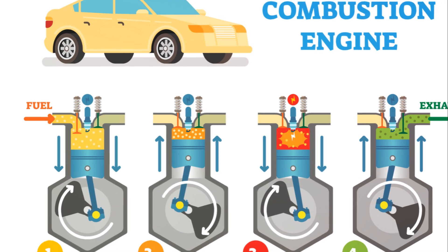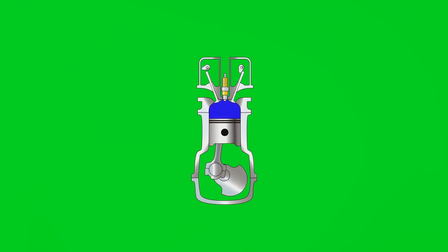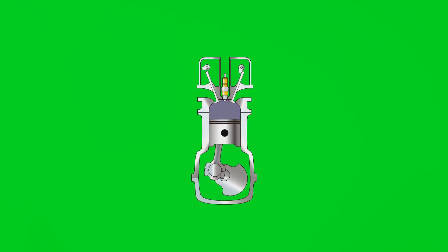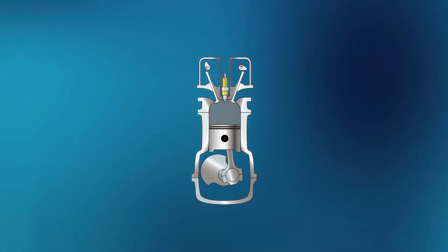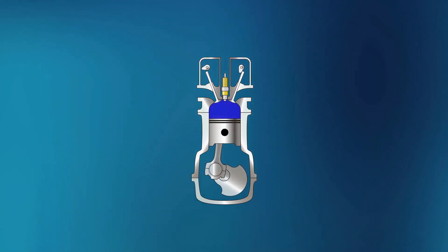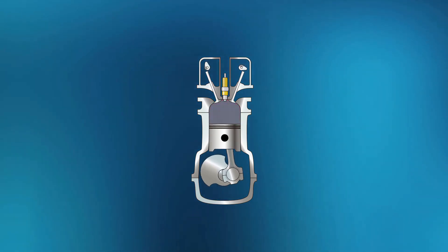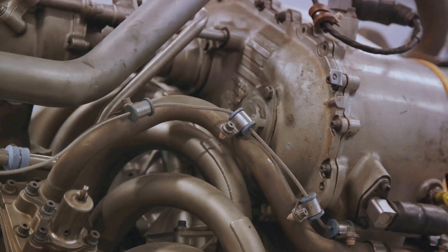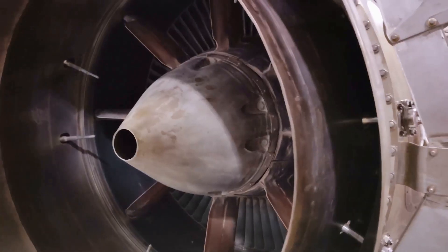The intake stroke is the first phase, where the piston moves down from the top of the cylinder, reducing the pressure inside the cylinder. During this phase, a mixture of fuel and air enters the cylinder through an intake valve. This process of intake is vitally important because the appropriate fuel-air ratio can significantly affect the engine's efficiency and emission levels.